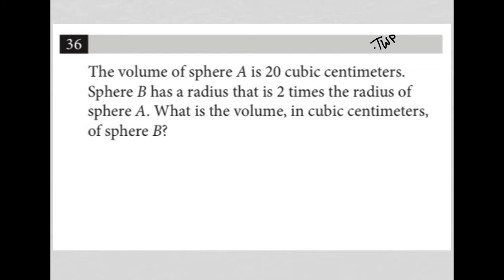Okay, so I can write V_A is equal to 20. Now the first page of the math test tells me what the volume of, or how to find the volume of a sphere. So if I check that out, I'll see that the volume of a sphere is four thirds pi r cubed. So I'm going to rewrite this as four thirds pi r cubed equals 20.